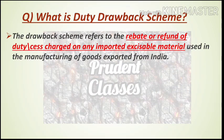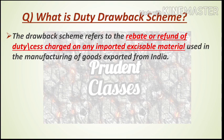Point number one: the drawback scheme refers to the rebate or refund of duty charged on any imported material used in the manufacturing of goods exported from India. If an importer has paid tax to import material, the refund which the exporter receives is the drawback scheme — under which custom duty or excise duty on goods used in manufacturing exported goods is provided back.